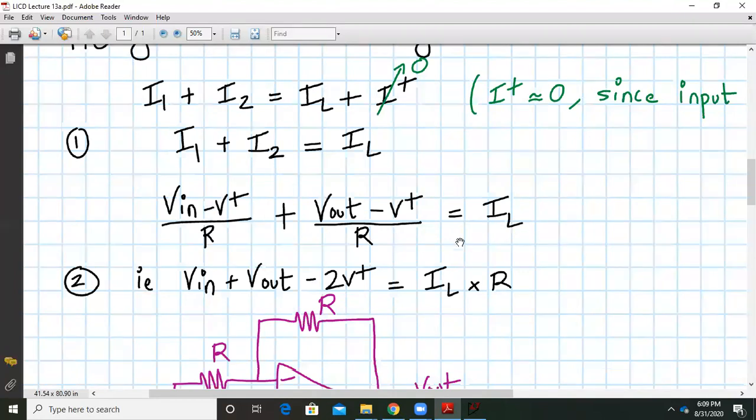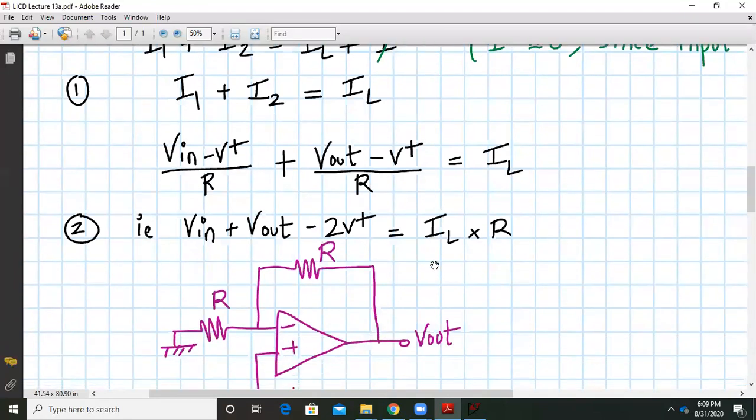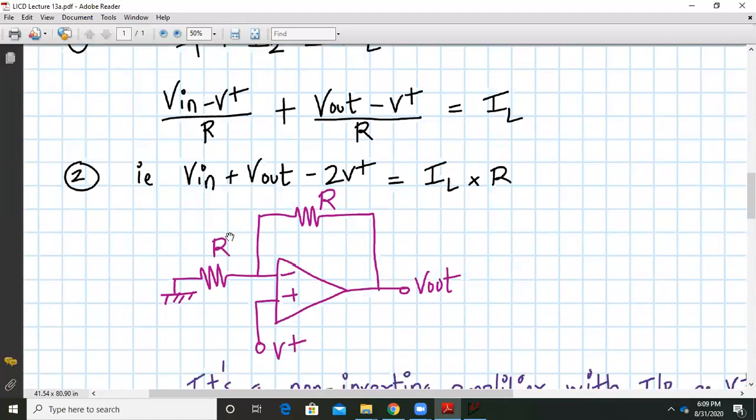In the denominator is a common thing. We can multiply it onto the right hand side. Finally, we get step number two: V in plus V out minus twice V plus is equal to IL times R.